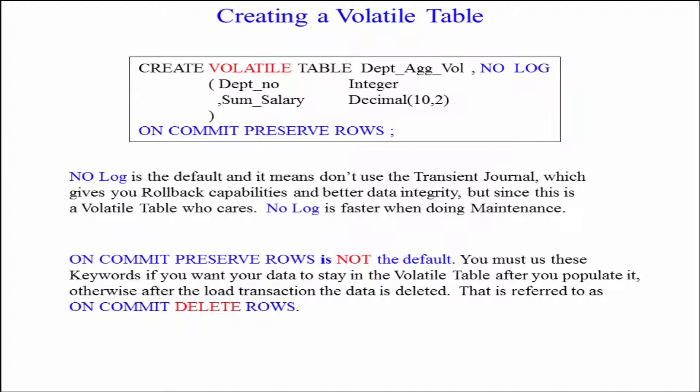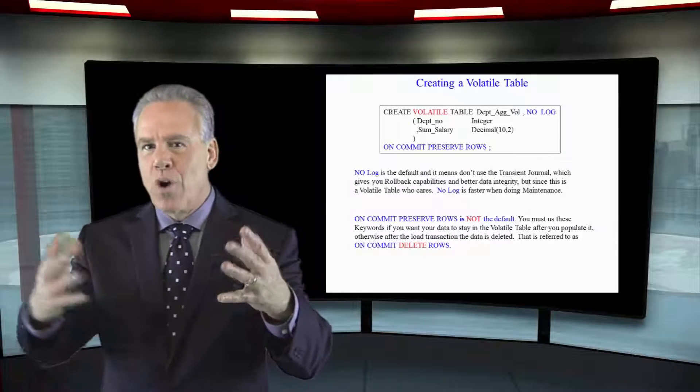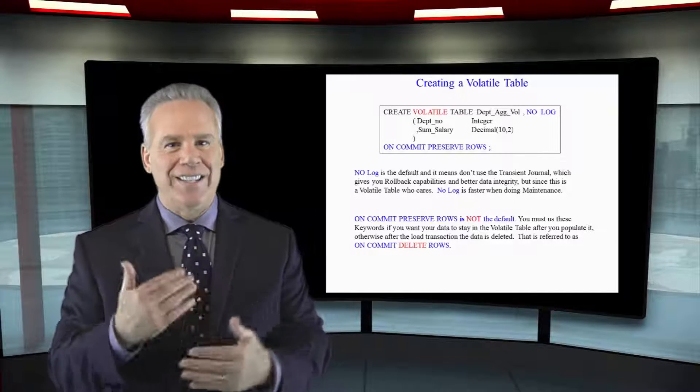Close that paren and I say ON COMMIT PRESERVE ROWS. I could actually say ON COMMIT DELETE ROWS. We'll talk about this. But when you say ON COMMIT PRESERVE ROWS it will preserve any rows inside there for the entire session.